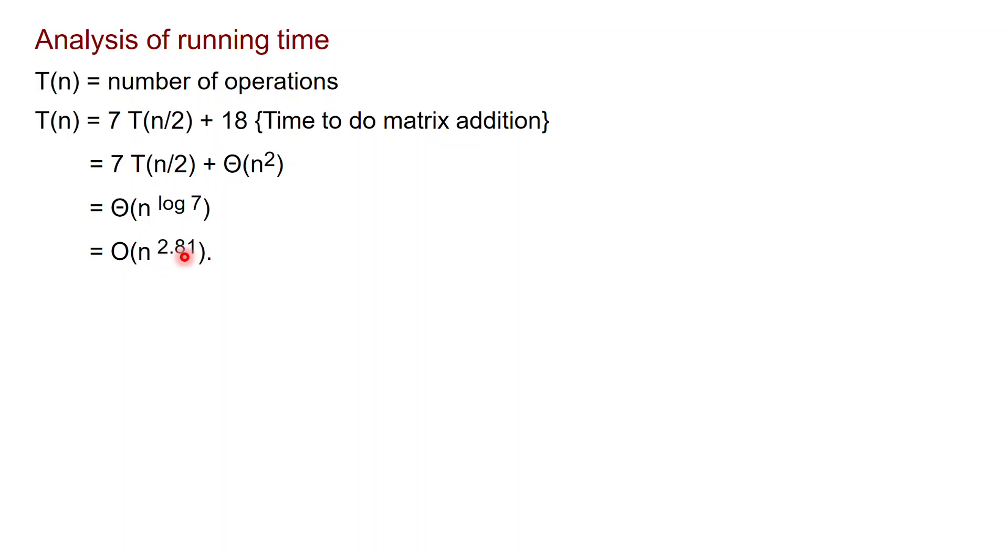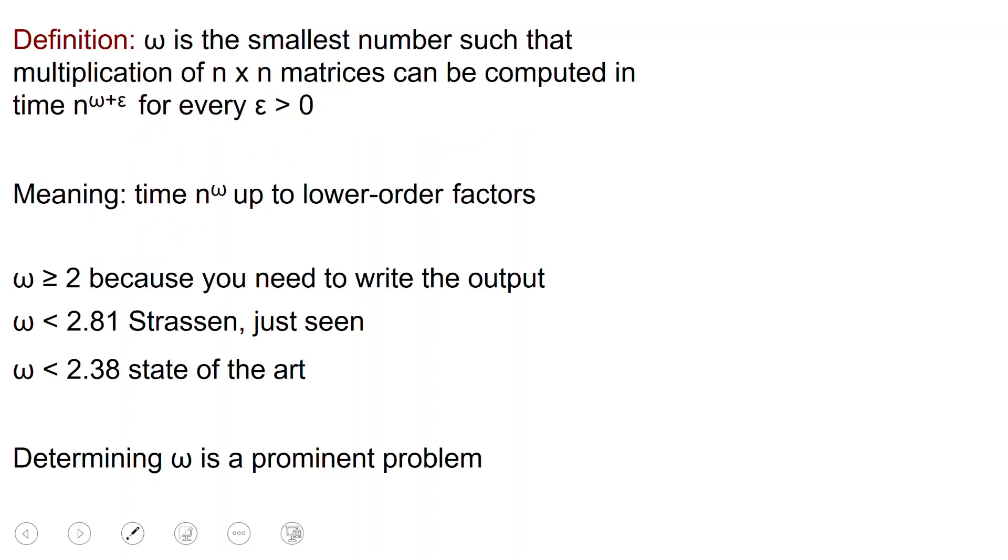Again, it's natural to ask if you can do faster. And in fact, the running time is so important that it has a name. Omega is known as the smallest number such that you can multiply n by n matrices in time n to the omega plus some epsilon, for n sufficiently large. So the bottom line is that you can multiply matrices in time n to the omega, up to lower order factors that we don't care about. Omega is obviously at least two because you have to write down the output.